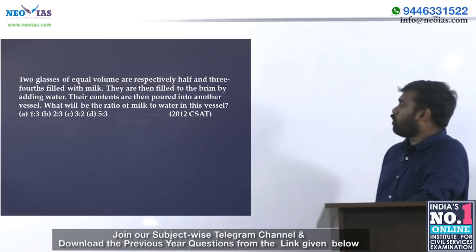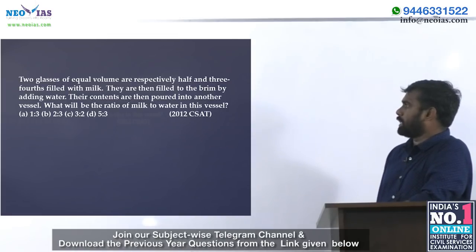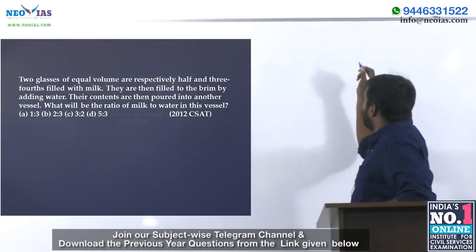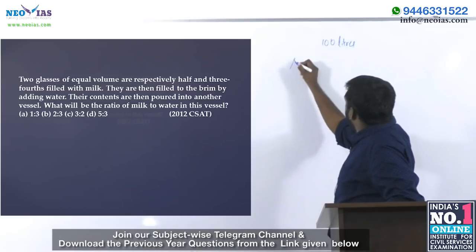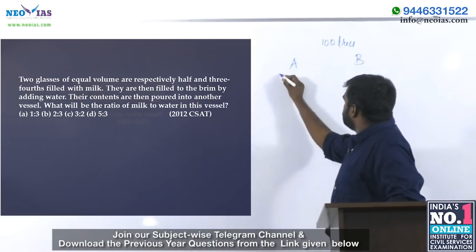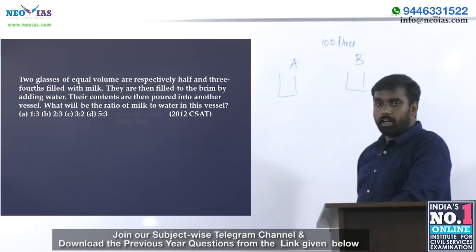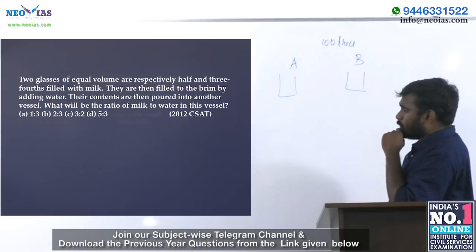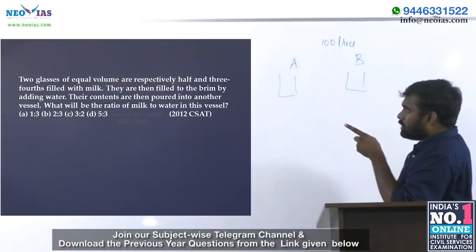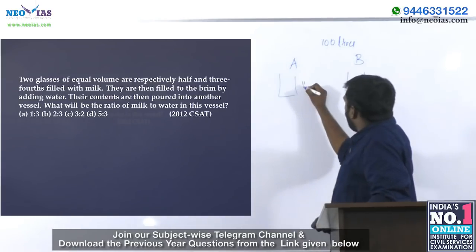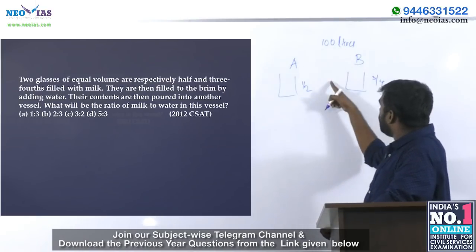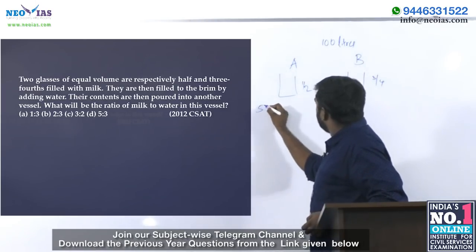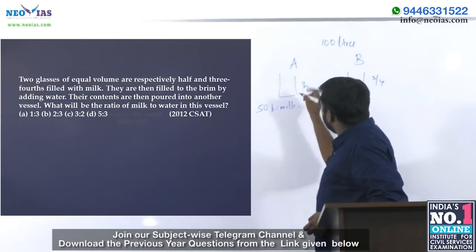Next question: Two glasses of equal volume are respectively half and three-fourths filled with milk, and then filled to the brim with water. I take the volume as 100 liters for each glass. Glass A has one-half milk, so 50 liters of milk. Glass B has three-fourths milk, so 75 liters of milk.